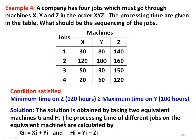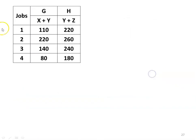Gi = Xi + Yi and Hi = Yi + Zi. The processing times on the equivalent machines: G — 110, 220, 140, 80; and H — 220, 260, 240, 80.